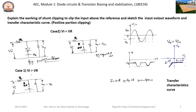Let us now discuss the working of a shunt clipper circuit to clip the input above the reference and sketch the waveform and transfer characteristics curve. The diode orientation is unchanged — the anode terminal is connected to the resistance. The cathode terminal is now connected to the negative of the reference voltage, and the positive of the reference is connected to ground potential. So Vr is now minus 2 volts. The load resistance is connected across the diode, hence it is called the shunt clipper. The circuit is shown in this figure.